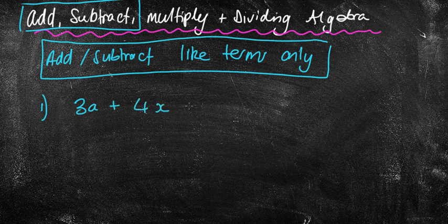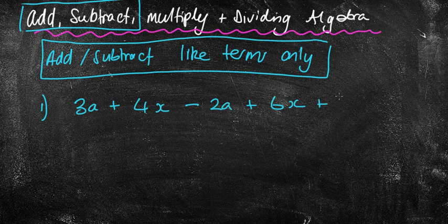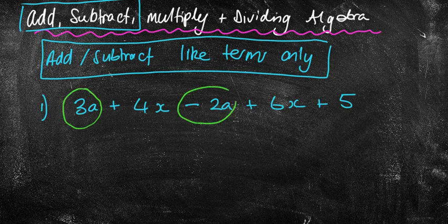So 3a plus 4x minus 2a plus 6x plus 5. Write the example down. First of all I'm going to show you the way that we start by doing these things, and that is by circling the like terms. Notice I have 3a's and I've got minus 2a's. Remember we always circle the sign that goes in front of it. That is plus 3a but we don't have a plus there.